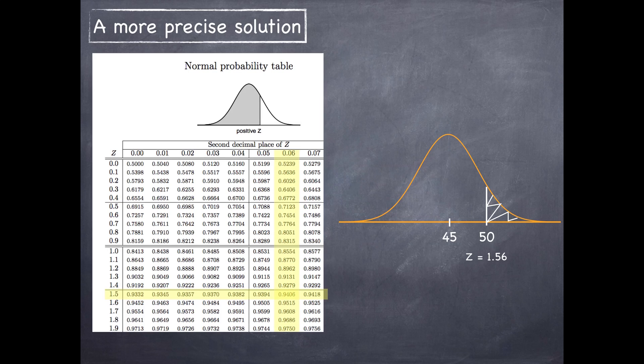And at the intersection of this row and column is going to be the area under the curve below 50. I know that this is the area below 50 because the little picture on top of the normal probability table is telling me that for any z-score that we look up, it's going to give us the shaded area. In other words, the area under the curve up to that particular z-score.